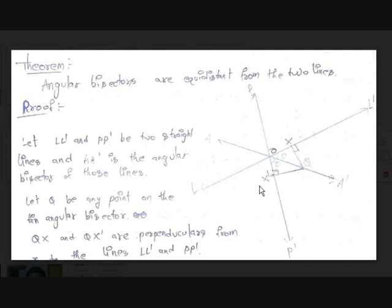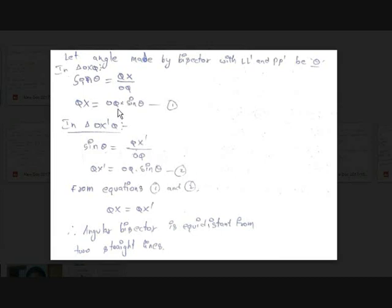Now if we take the sine of the angles in these triangles — from triangle OXQ, sine theta is the opposite side over the hypotenuse, which is QX over OQ. So QX = OQ·sin θ. That's equation 1. Similarly, in right angle triangle OX'Q, sin θ = QX'/OQ, so QX' = OQ·sin θ. That's equation 2.